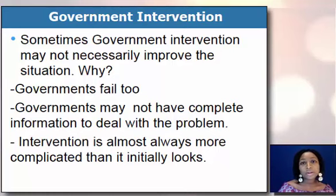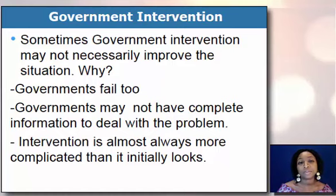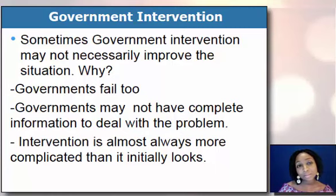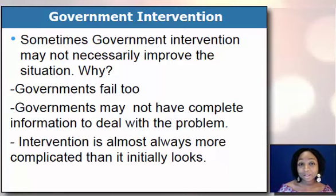But you might wonder, what's going on in the world? Everything is not so perfect and there are governments in most countries, so why is everything not that perfect? Well, sometimes government intervention does not necessarily improve the situation. Governments fail. And sometimes, as always happens in the real world, information is not always complete — so government may not always have the complete information to deal with the problem. And of course, it's a complex world. Intervention is not always that direct; sometimes intervention needs more intervention and it's a lot more complicated than it looks.